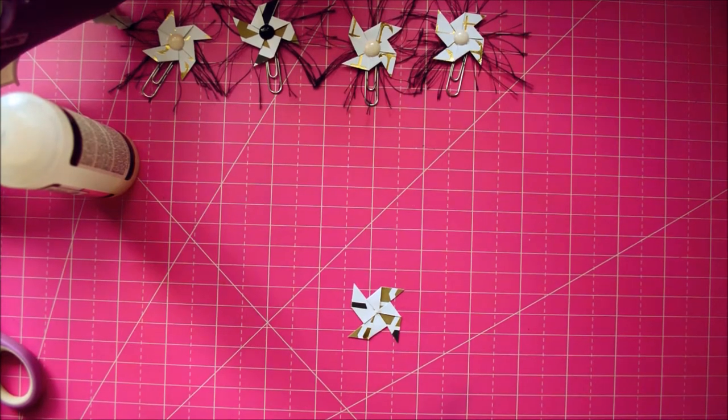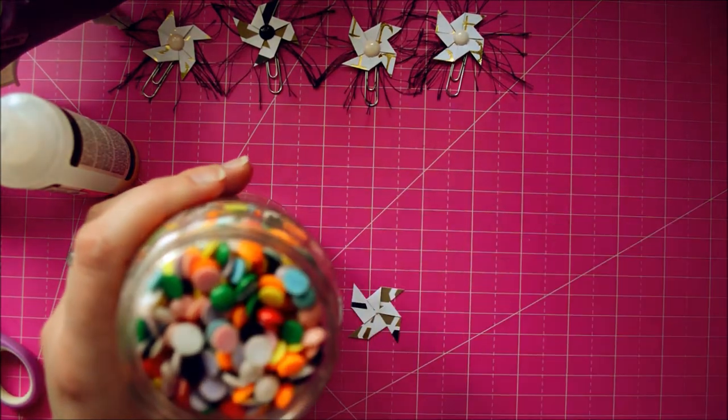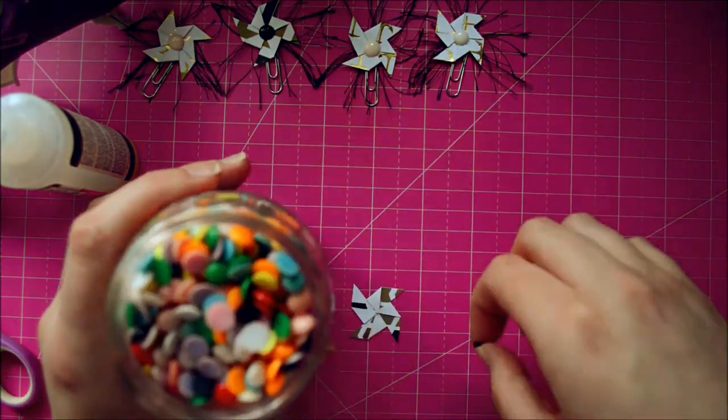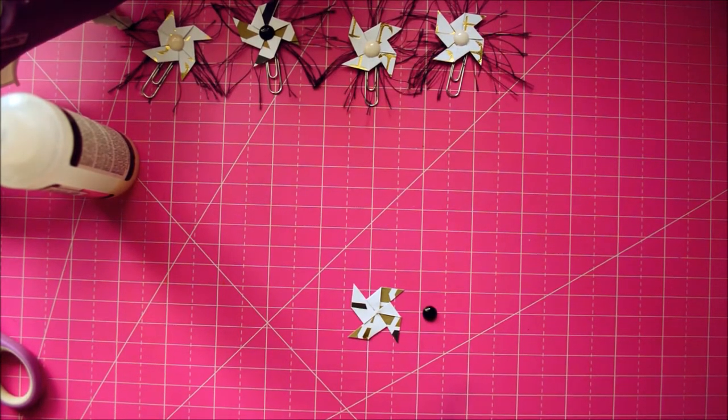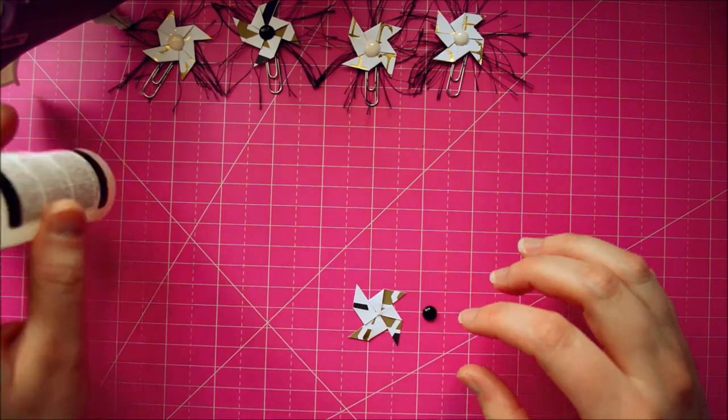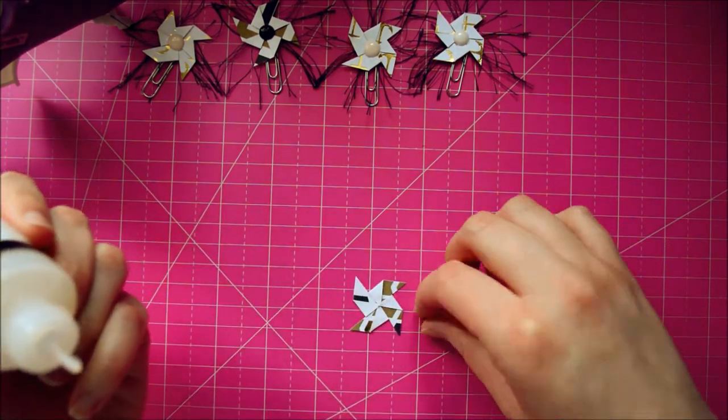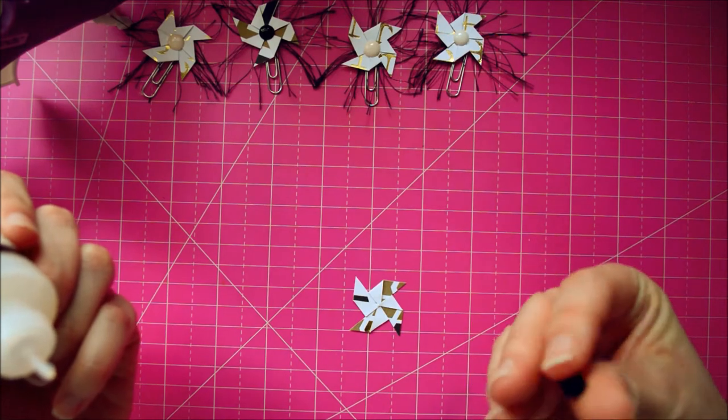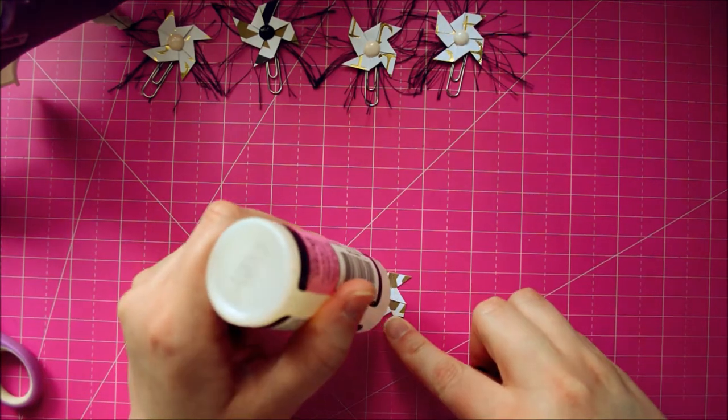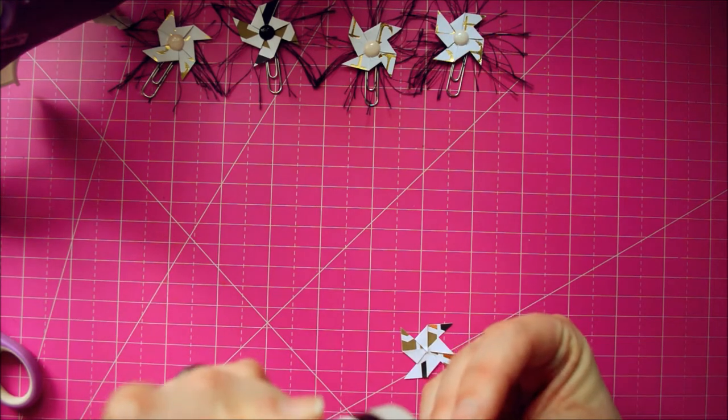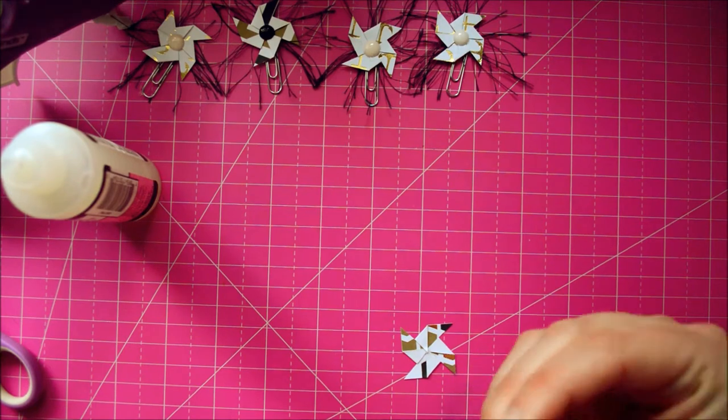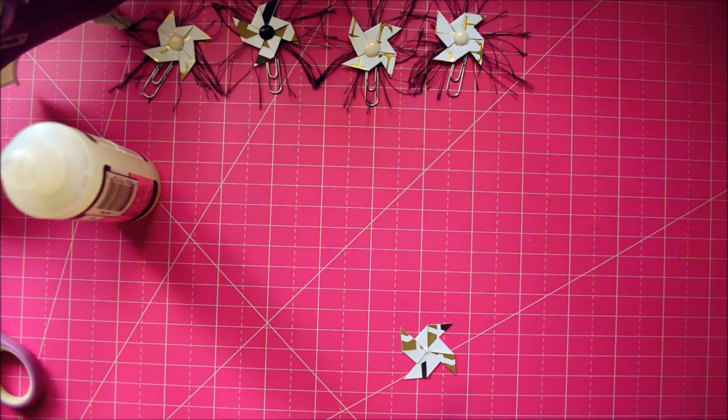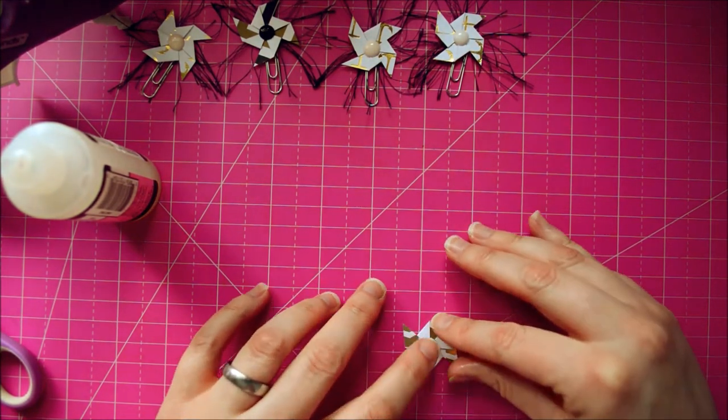Now that that's done, we're going to find an enamel dot here. I think I will put black on there. And because these are homemade enamel dots, obviously they don't have any adhesive or anything on the back. So I will have to put a little bit of glue on the back here. And put it in the center to cover up the joins.